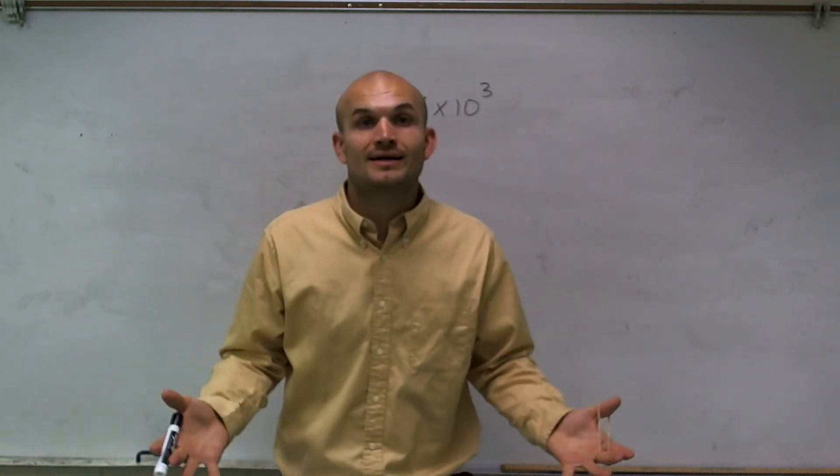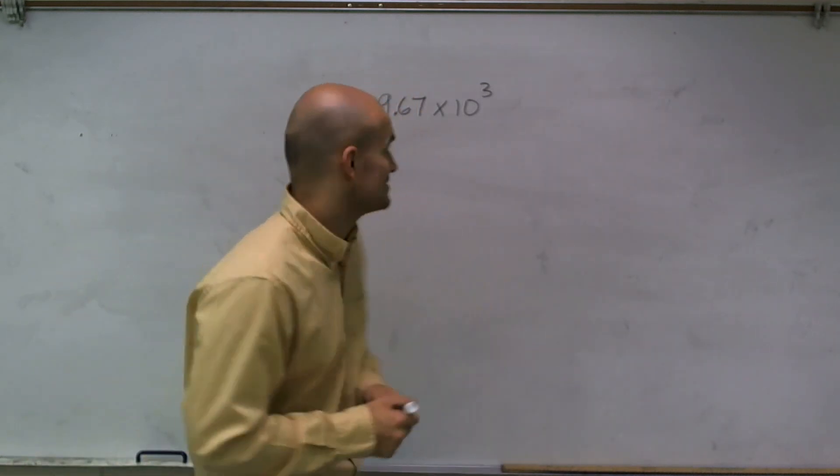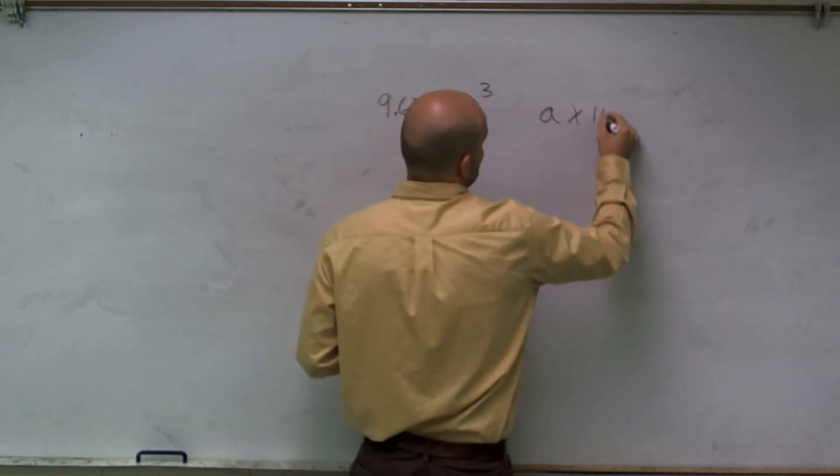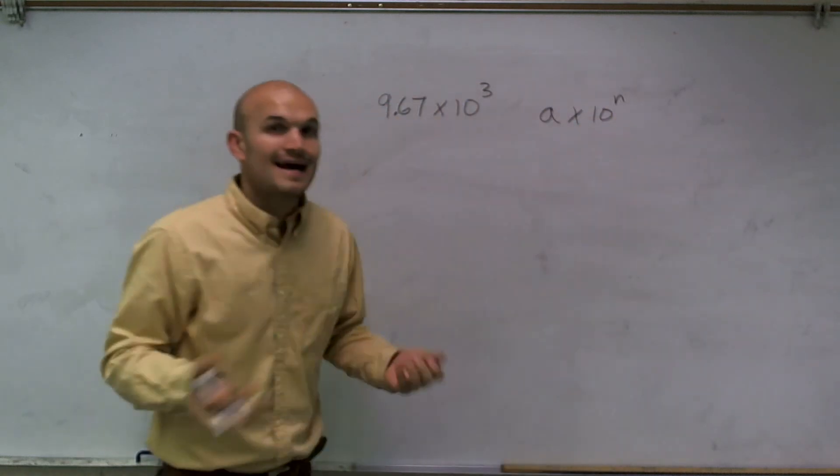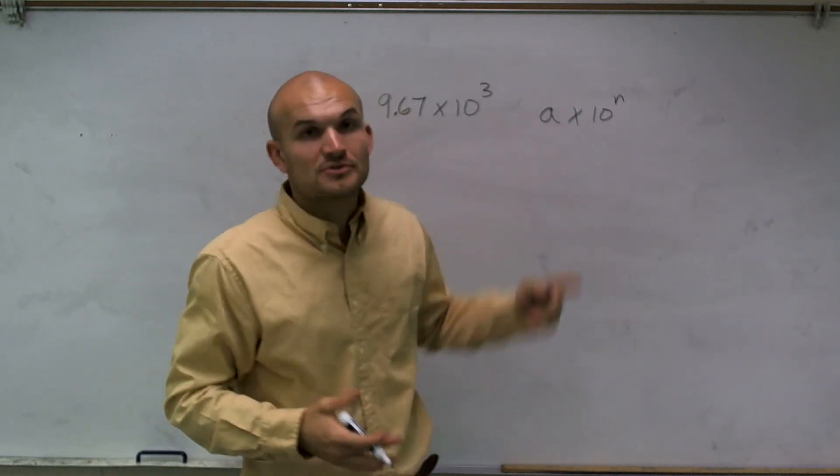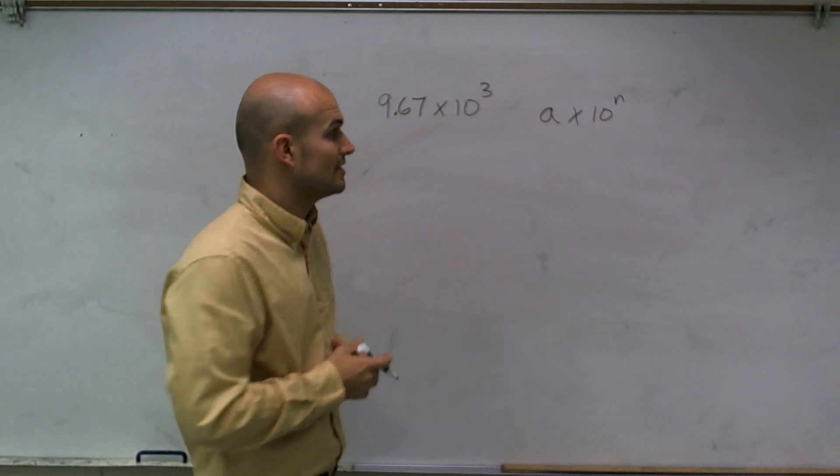So the first thing we want to do before we do that is really understand what exactly is scientific notation. Well, the general form for scientific notation is a times 10 to the n, where a is going to be a number that's between 1 and 10, and n is going to be any integer, which can be positive or negative.